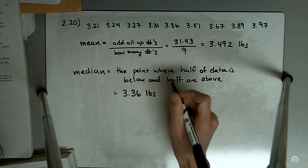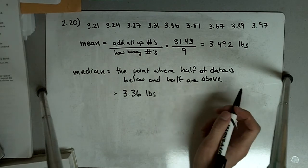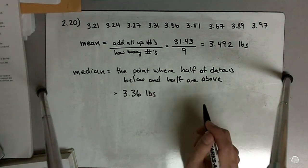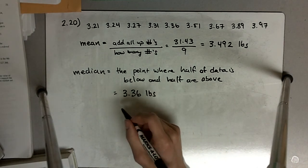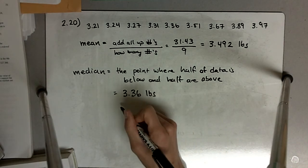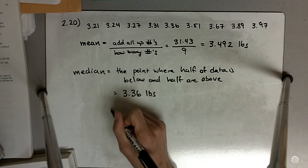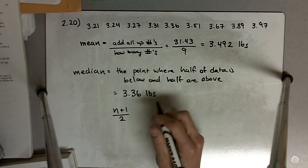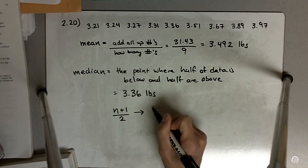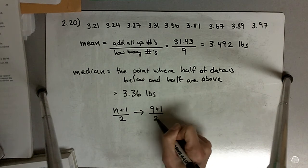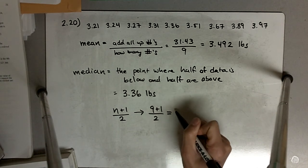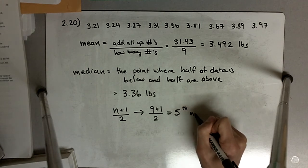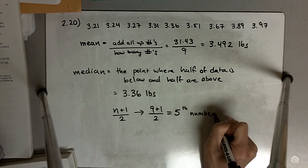3.36 pounds. But for very large data sets, it will actually be inconvenient to count like that. So the trick is: you take the number of numbers you have, which is n, add 1, and divide by 2. So in this case, with nine numbers, we get 9 plus 1 divided by 2 equals 5. So the median is going to be the fifth number in our list.